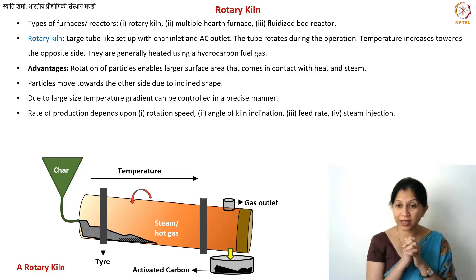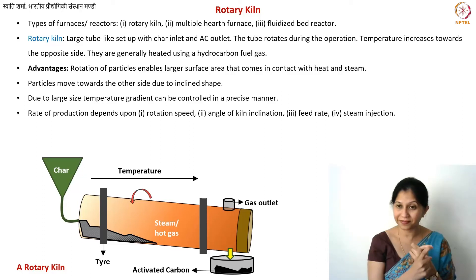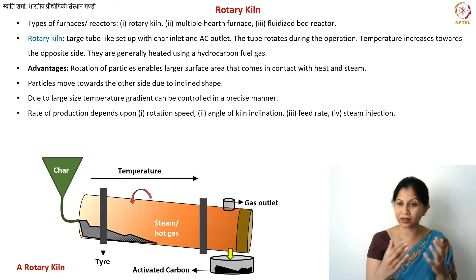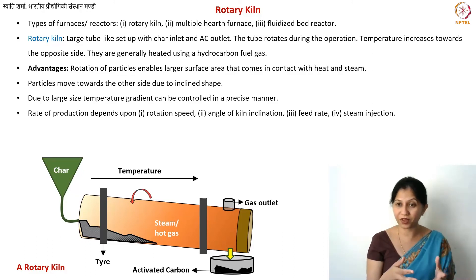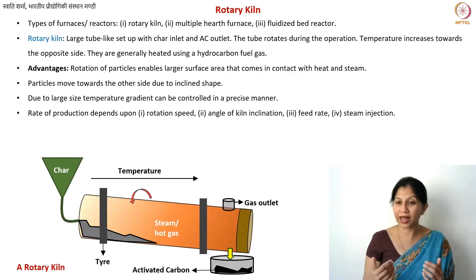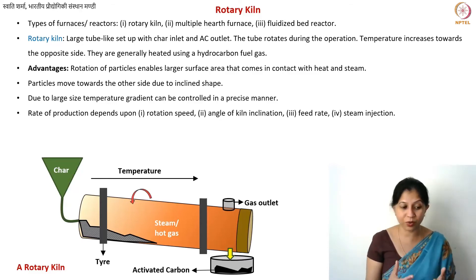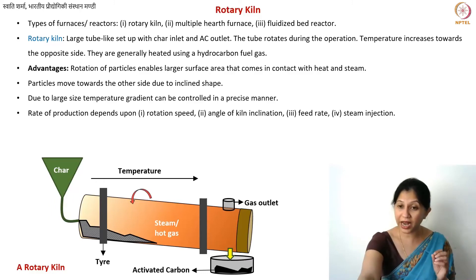To decide the rate of production, the key parameters are: first, how fast you rotate your kiln; second, the angle at which the kiln is tilted, which determines how fast particles move and come out; and also the feed rate — how much you are feeding in, and how much activated carbon you take out. Feed in and mass out determine the production speed. The steam injection also determines the residence time, which you may want to increase or decrease depending on the steam conditions and particle size.